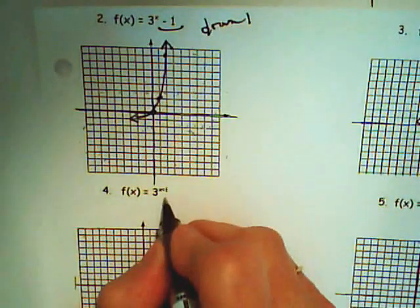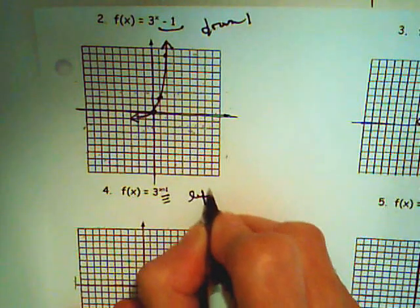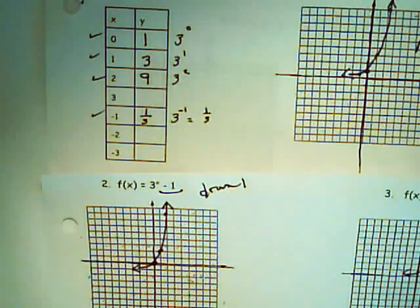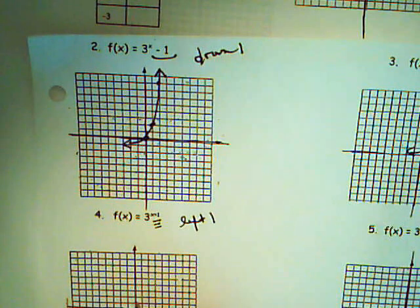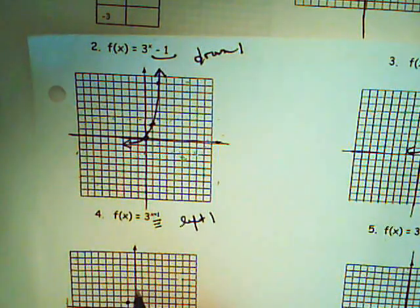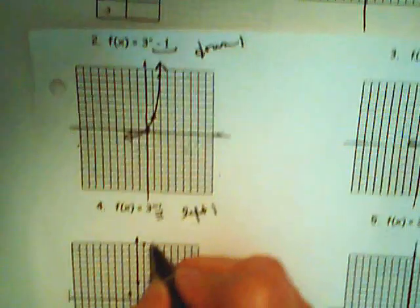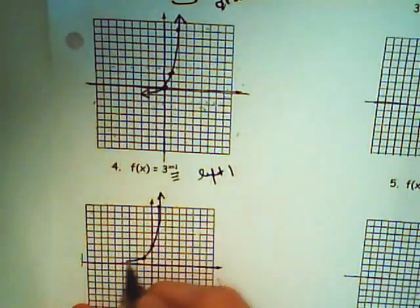3 raised to the x plus 1 — that's not a number sitting on the end, so we're going to shift left one. Remember those original points. Instead of (0, 1), I'm shifting left one. (1, 3) shifts left one. (2, 9) shifts left one. Remember the shape? There's your problem.